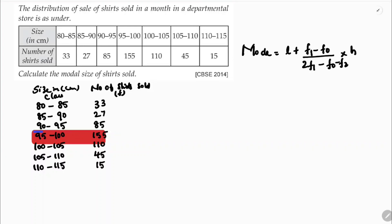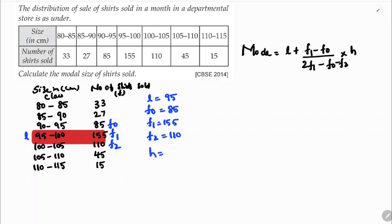The lower boundary L of the modal class is 95. The frequency of the modal class f1 is 155. f0, the frequency preceding the modal class, is 85. f2, the frequency following the modal class, is 110. The class size h is 5, since 85 − 80 = 5.